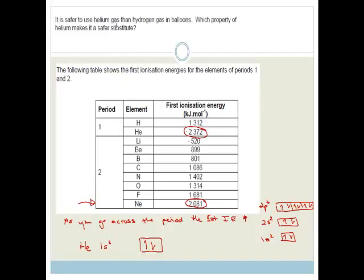It says, is it safer to use helium gas than hydrogen gas in balloons? Which property of helium makes it the safest substitute? Well, the fact that it is full, it is stable, it has no reason to lose an electron. And because the fact that the ionization energy, the energy required to remove electron is so high, compared to hydrogen, which is half that.